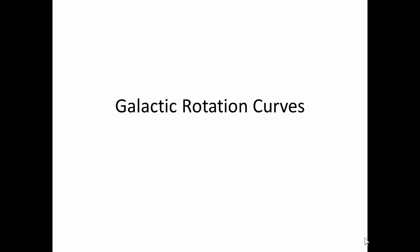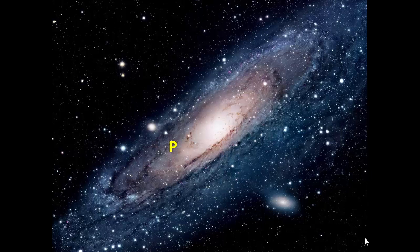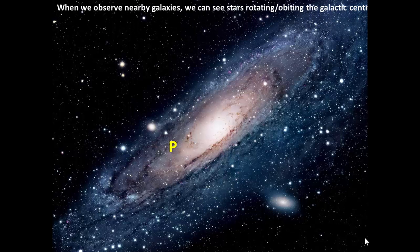For this section we need to look at galactic rotation curves. We have a photograph of the Andromeda galaxy here and all the stars are basically rotating around the galactic center. They're in an orbit around the galactic center. So when we observe these galaxies we can see these stars rotating or orbiting the galactic center.